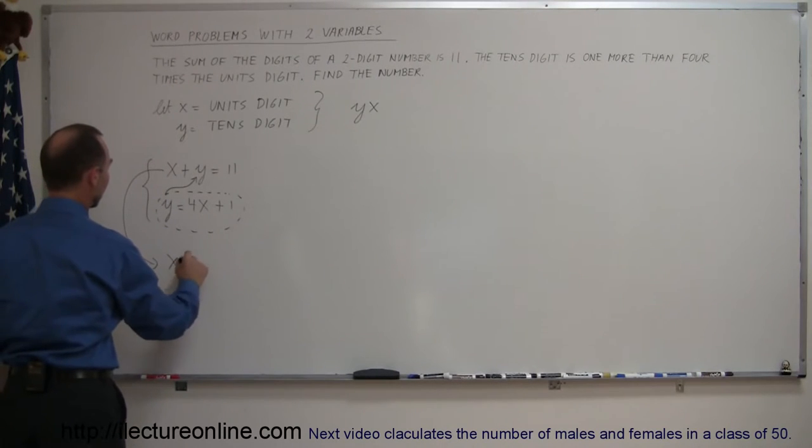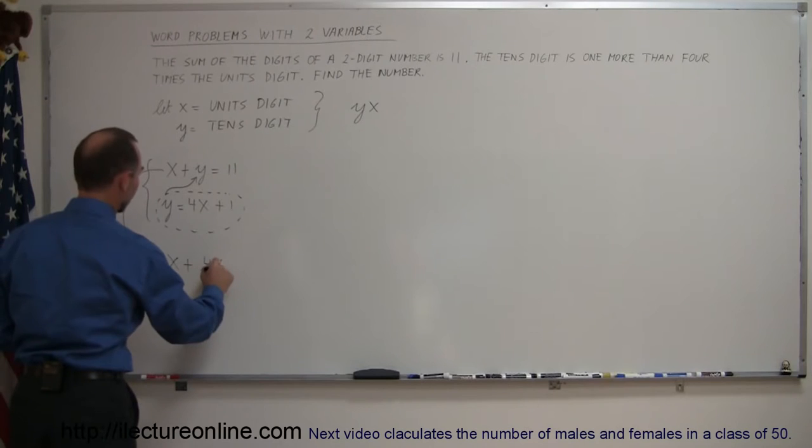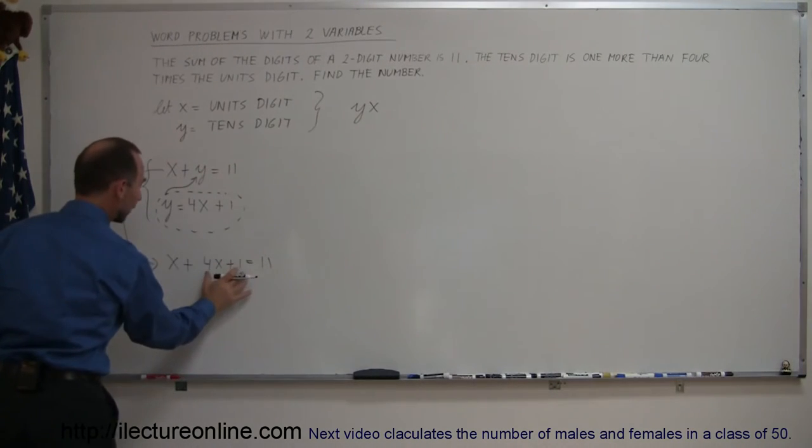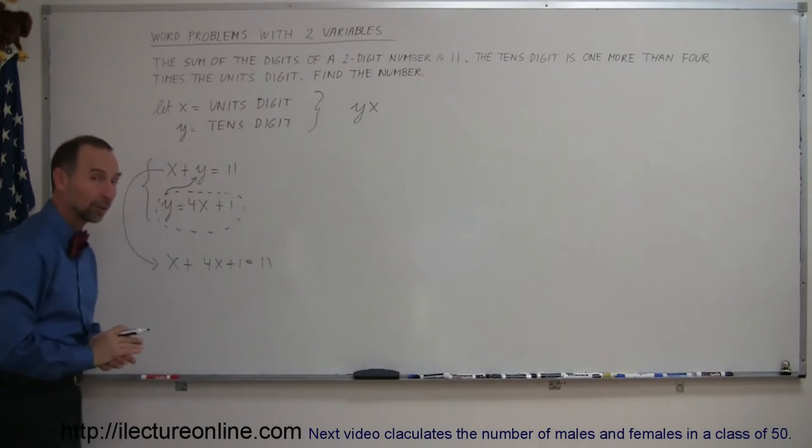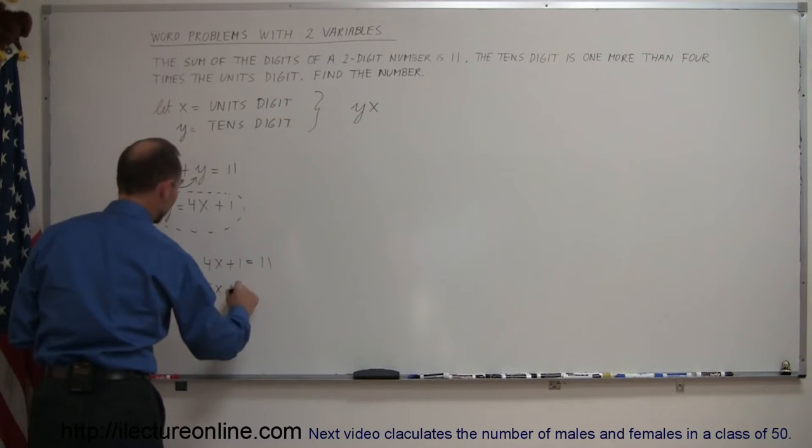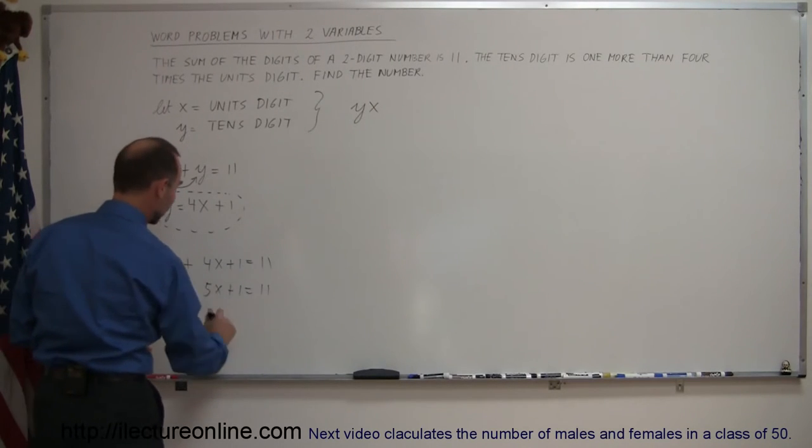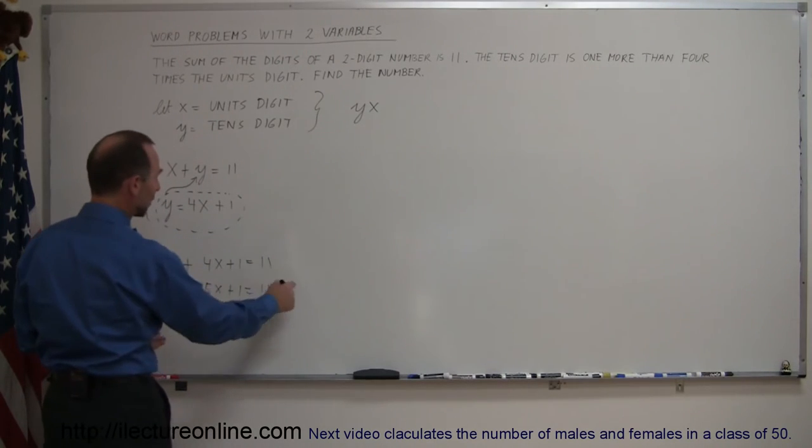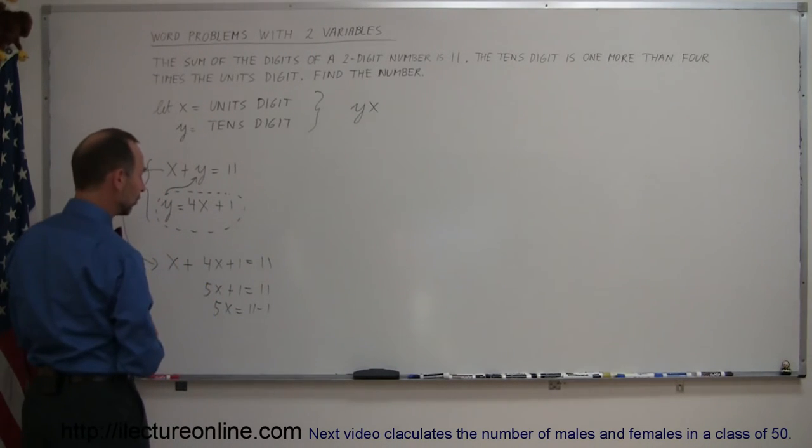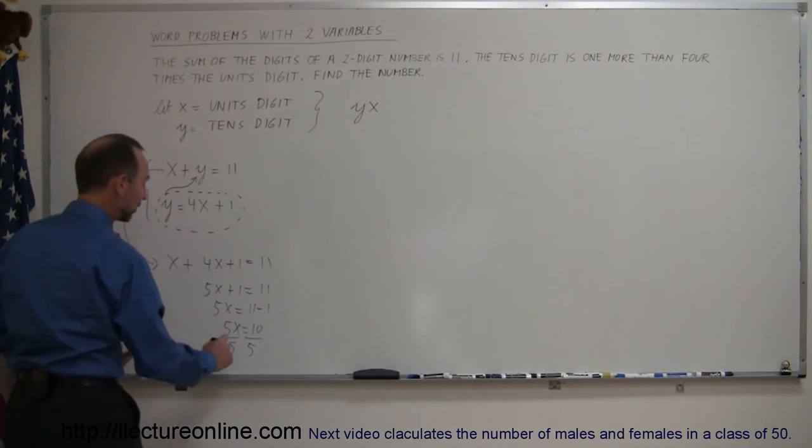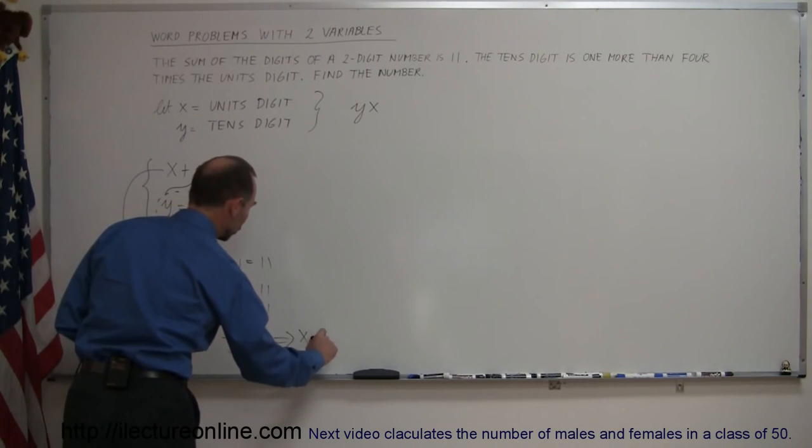You get x plus y, where y is 4x plus 1, equals 11. Notice that y is now replaced by 4x plus 1. Now simply solve this equation for x. This equals 5x plus 1 equals 11, combining the x's. Bringing the 1 across, this is 5x equals 10. Remember when we cross the equal sign, you change the sign. Dividing both sides by 5, the coefficient in front of x, means that x equals 2.